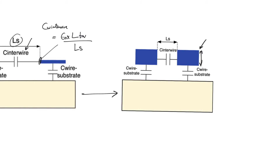This leads to a much higher interwire capacitance. The product Tw times L stays the same or even increases — chips are becoming larger, wires are becoming longer, and Tw is not scaling down as fast — so that area increases. Additionally, wires are packed closer together, so Ls also decreases. The combined effect significantly increases the interwire capacitance in modern technologies.